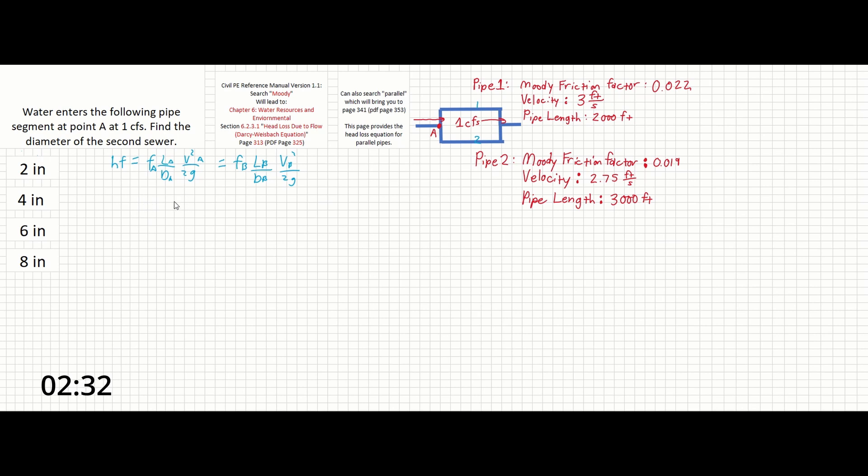We have fa here equals 0.022, length of a is going to be 2,000 feet, the diameter is what we're searching for, let's call that d1 instead of a, it's just easier for me. The velocity is 3 feet per second